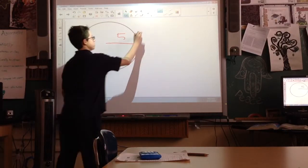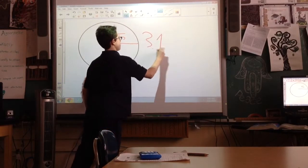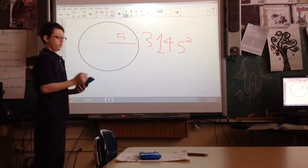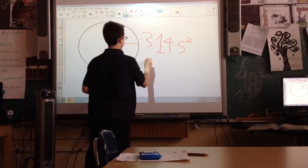So we have to take 3.14 multiplied by 5 squared. 5 squared is 25.